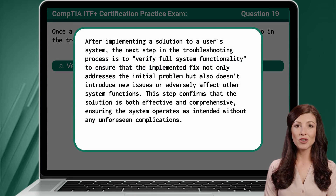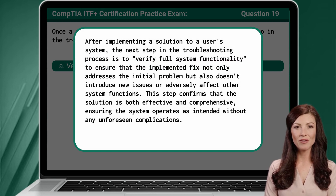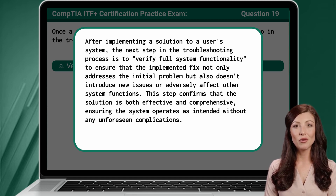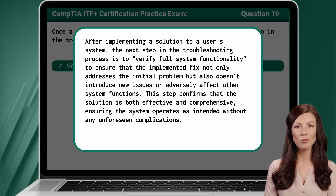After implementing a solution to a user's system, the next step in the troubleshooting process is to verify full system functionality to ensure that the implemented fix not only addresses the initial problem but also doesn't introduce new issues or adversely affect other system functions. This step confirms that the solution is both effective and comprehensive, ensuring the system operates as intended without any unforeseen complications.